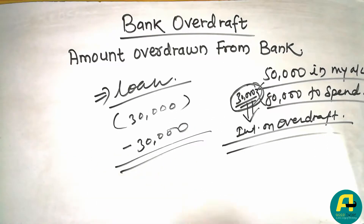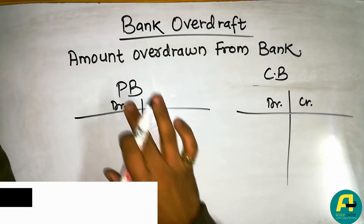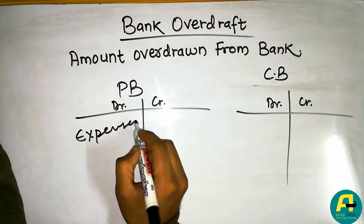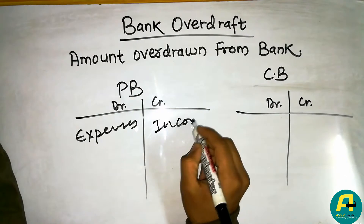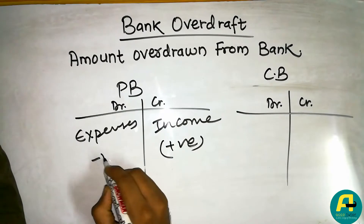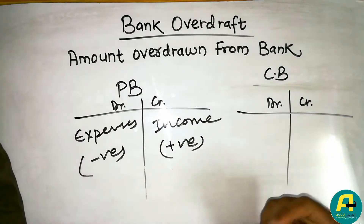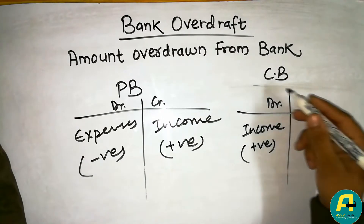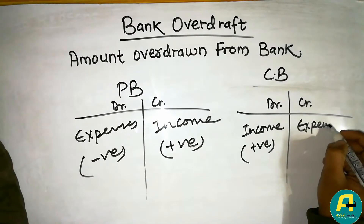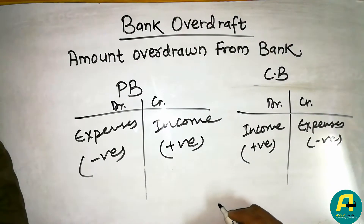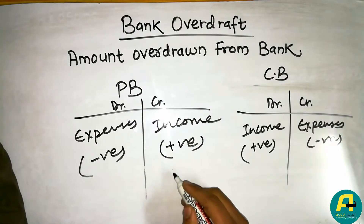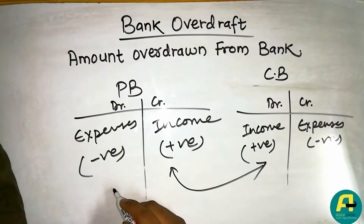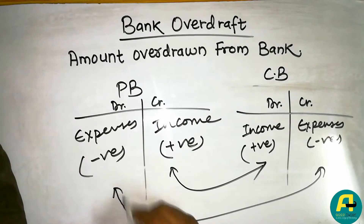Let me make clear about the two sides of the pass book and cash book. The debit side of the pass book is the expenses side and the credit side of the pass book is the income side — credit is positive and debit is negative for the pass book. In the cash book it is the opposite: the debit side is the income side (positive) and the credit side is the expenses side (negative). The pass book credit side equals the cash book debit side, and the pass book debit side equals the cash book credit side.